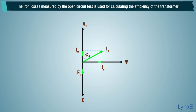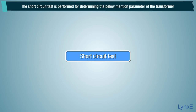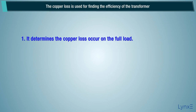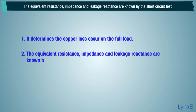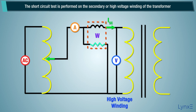The short circuit test is performed for determining the below-mentioned parameters of the transformer. It determines the copper loss occurring at full load. The copper loss is used for finding the efficiency of the transformer. The equivalent resistance, impedance, and leakage reactance are known by the short circuit test. The short circuit test is performed on the secondary or high voltage winding of the transformer.